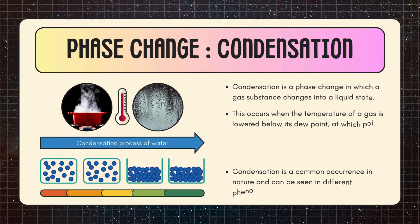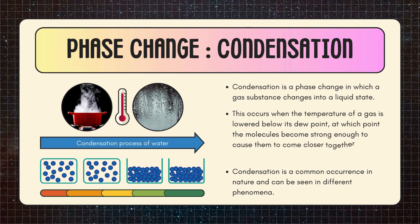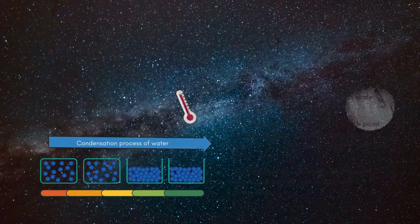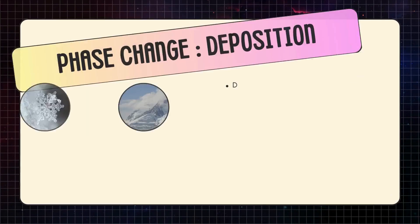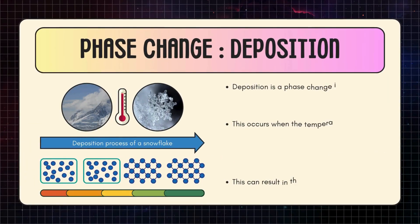Condensation is a phase change in which a gas substance changes into a liquid state. This occurs when the temperature of a gas is lowered below its dew point, at which point the molecules become strong enough to cause them to come closer together and form a liquid. Condensation is a common occurrence in nature and can be seen in different phenomena.